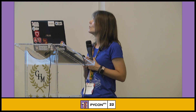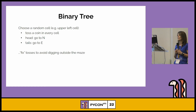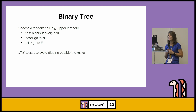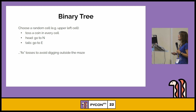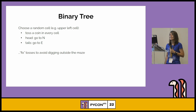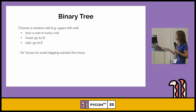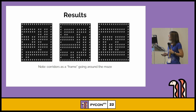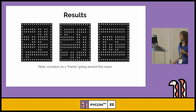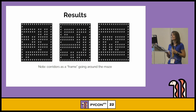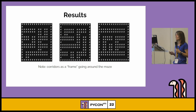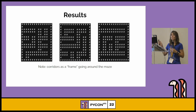How does the binary tree algorithm work? You choose a random cell, for example the upper-left cell, and then you toss a coin for every cell. If it comes up heads you go north, otherwise you go east and carve a passage. What is important is that you fix certain tosses to avoid digging outside the maze. The result is very peculiar — you can see corridors going through the northern and eastern sides of the maze, giving a very specific frame characteristic of this algorithm.